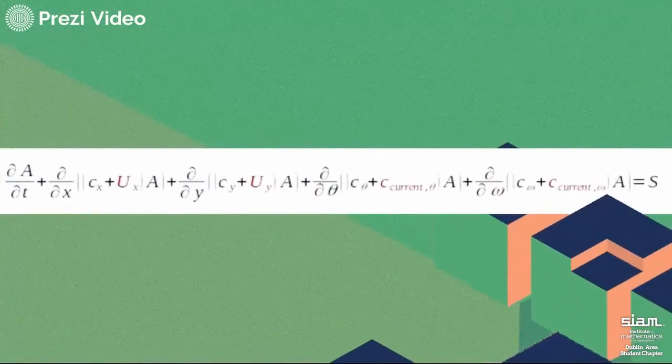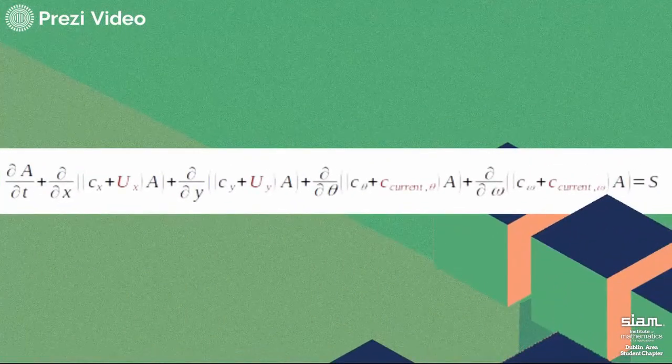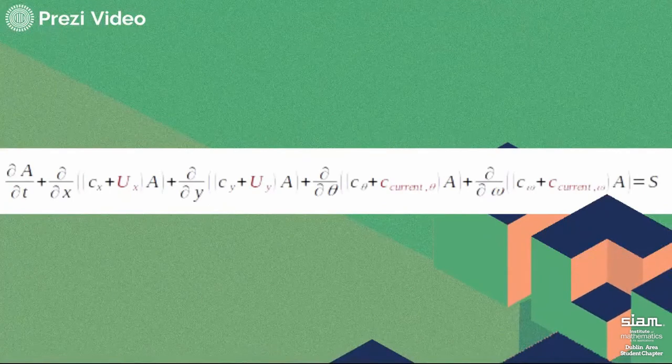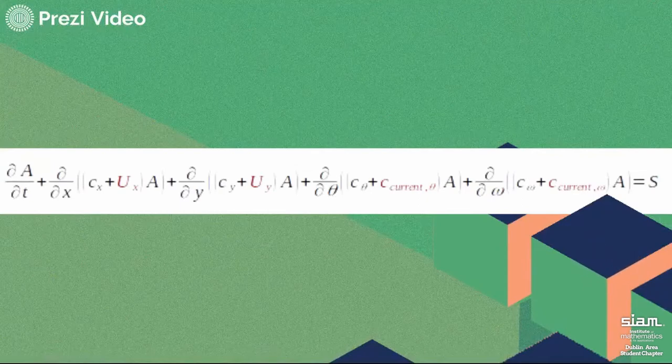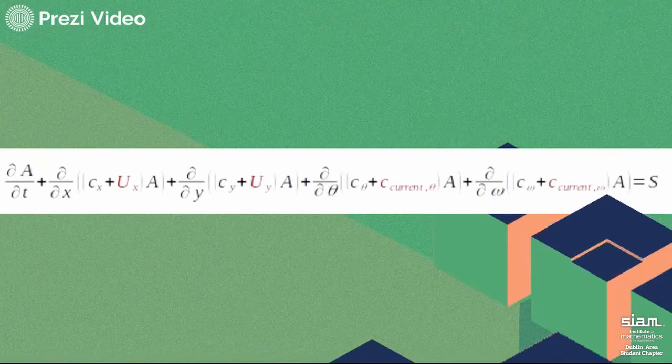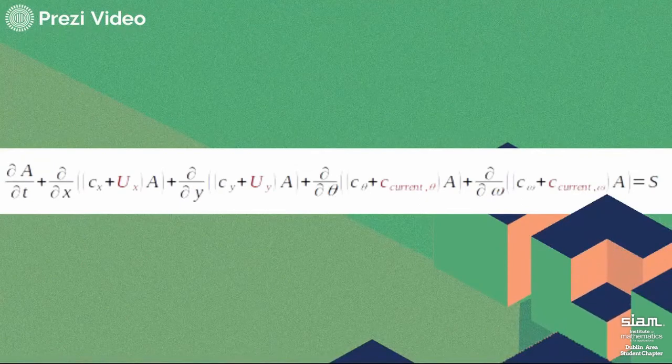For the wave part, the wave spectrum is solved using the wave action balance, which is shown here. The coupling with the currents appears as a correction of the wave group velocities, wherever they appear in the equations.